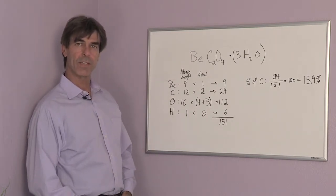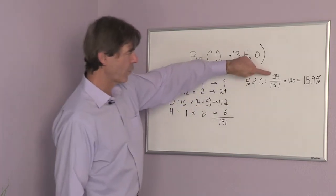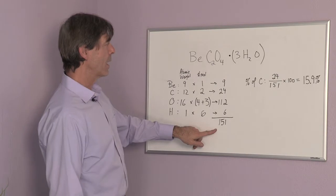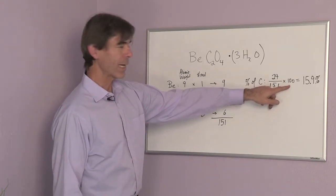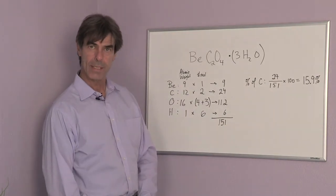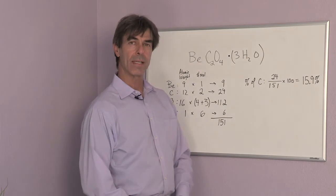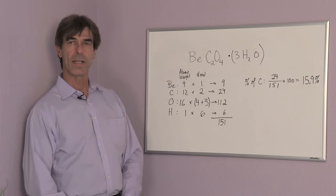To calculate the percentage of carbon, we look at how much carbon we have, which is 24, and we divide by the total number of grams per mole, which is 151, and multiply by 100 because we want to have a percentage. And the answer is 15.9 percent is the mass percentage of carbon in the hydrated form of this solid.